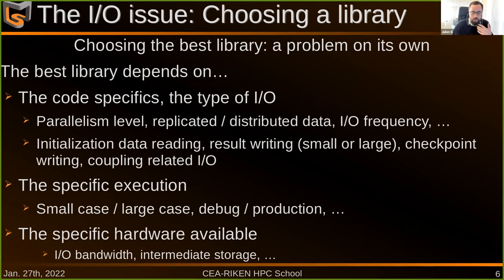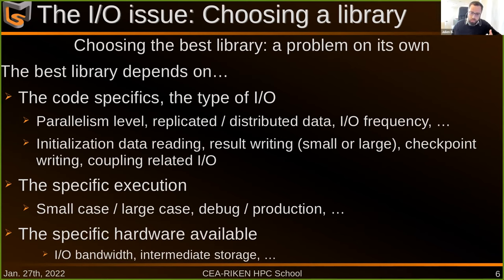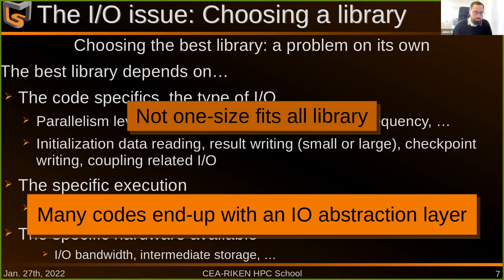The best library depends on the type of IO you do. It depends on the type of code you're working with, what level of parallelism, what's the frequency of the IO, whether you're doing checkpointing, writing results, or reading initial parameters. It also depends on the execution — a small debug test versus a large production run — and on the hardware you're using. As a result, there is no single library that is the best every time.